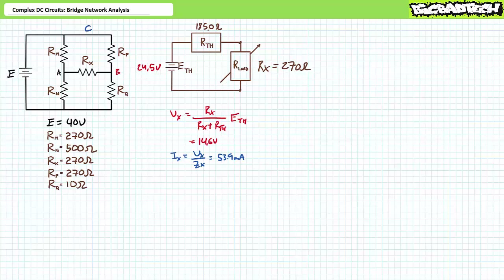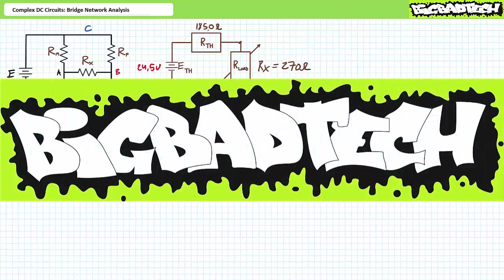In conclusion, this lecture examined the analysis of complex circuits — circuits in which elements are neither purely in series nor purely in parallel — in the form of a bridge network, using delta-to-Y conversions and Thevenin's theorem. Remember to review these concepts as often as needed. Thank you for your attention and interest, and we'll see you in the next lecture. Remember to tell your lab partner about this resource and check out the Big Bad Tech channel for additional resources.